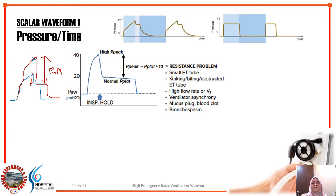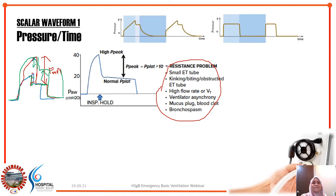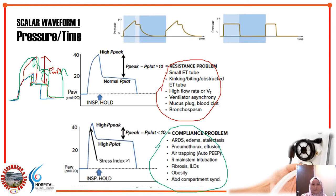Increased airway resistance differentials include bronchospasm, secretions, and kinked ETT. On the other hand, if PIP is high and the P-plat has also risen, but the airway pressure difference remains the same, it means P-plat has increased — indicating a compliance problem. The lung has become poorly compliant. Causes of poor compliance include ARDS, pneumothorax, and pulmonary edema, and these should be troubleshot accordingly.